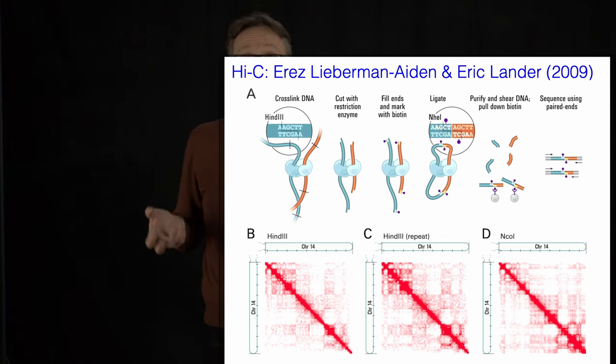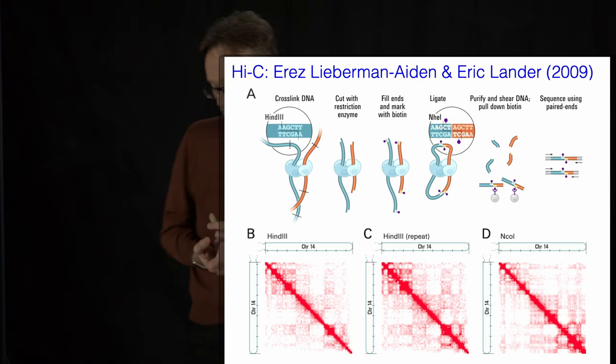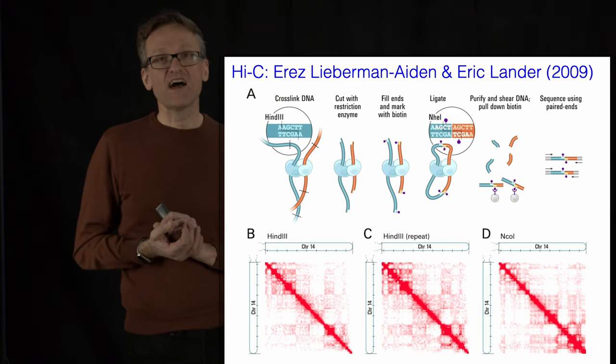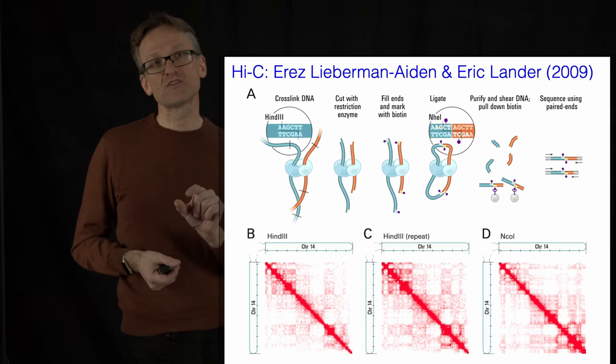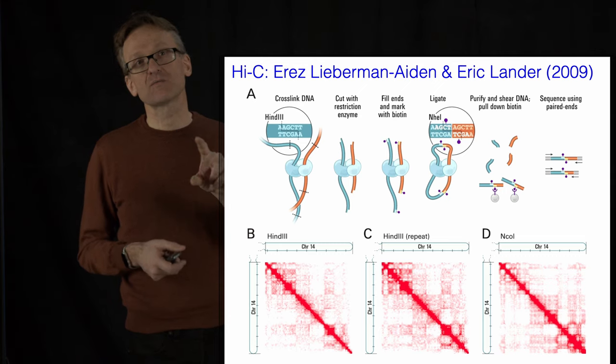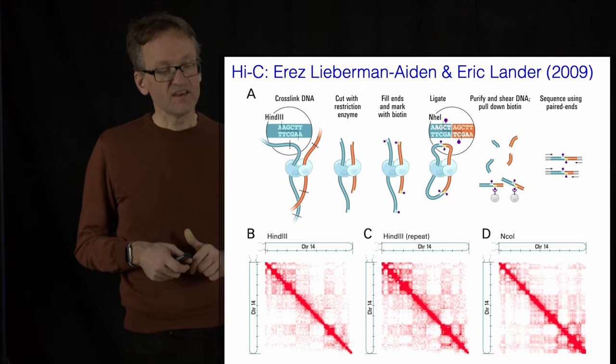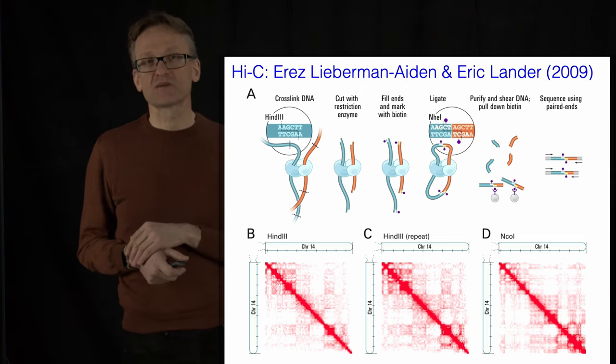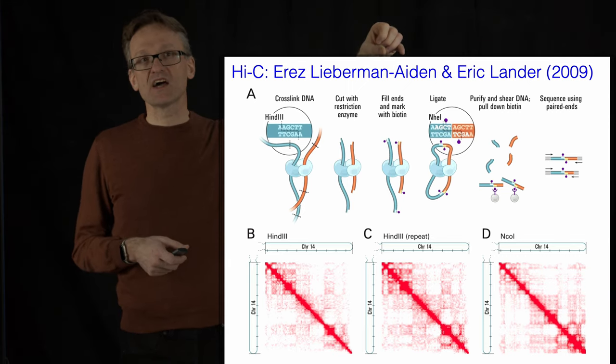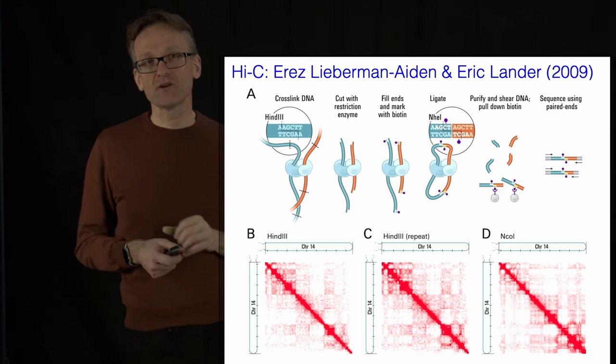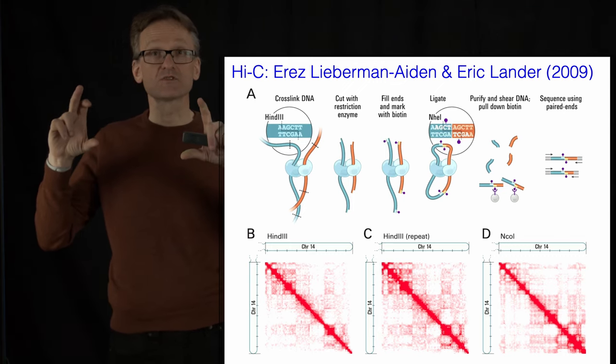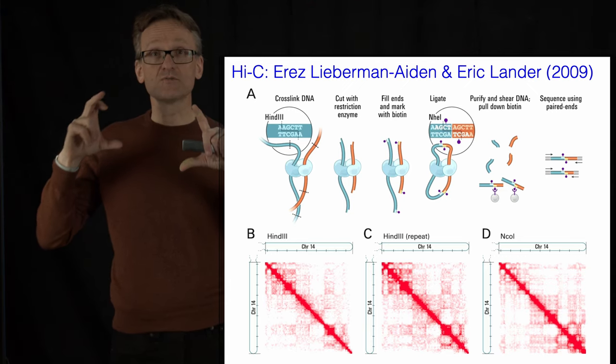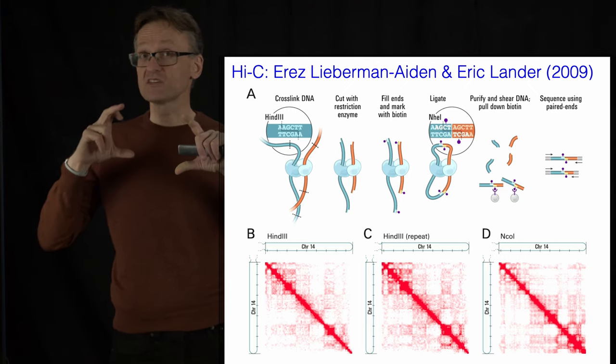Well, what Erez Lieberman-Aiden and Eric Lander did about a decade ago is that they came up with a very smart method. Briefly, they're adding small chemical linkers so that if two parts of DNA are close to each other in space, we tie them up and then we create a small break around them. And then we use shotgun sequencing. If I now sequence these small fragments around that particular break, I will now get a small sequence of letters here, and a small sequence of letters here. And all I know is that these had to be close to each other spatially, not in sequence but in space.